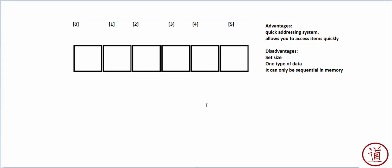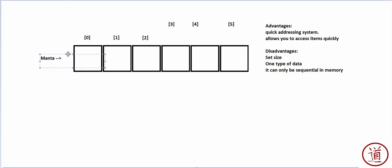We have our simple addressing system. When we talk about an array — let's say I create an array called Manta — what we're really doing is creating a reference that points to the first memory address. With the indexing system, we're telling the computer how far to move up from that spot. That's why all the items have to be the same type: they all have to be the same size. If I say Manta[3], it means go to Manta[0] and move up three spots.